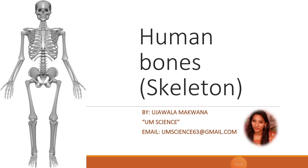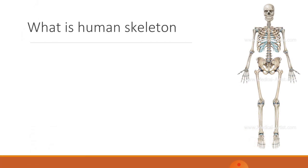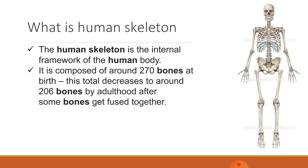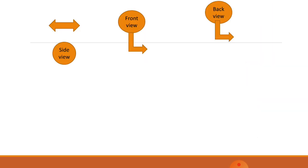Hello everyone, this is Ujwala and welcome to our channel UM Science. Today the video is about human bones, where we will discuss the skeleton in detail. The human skeleton is the internal framework of the human body — it supports our whole body. It is composed of around 270 bones at birth, and this total decreases to around 206 bones by adulthood after some bones get fused together. The bone mass of the skeleton reaches maximum density around age 21.